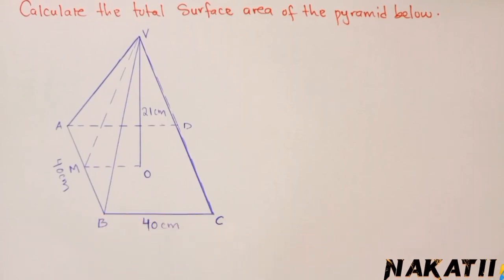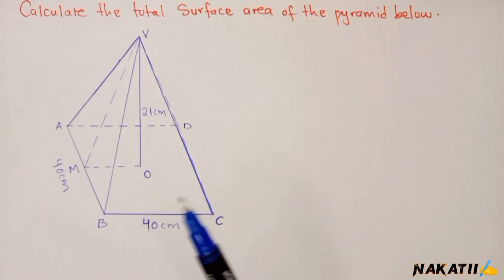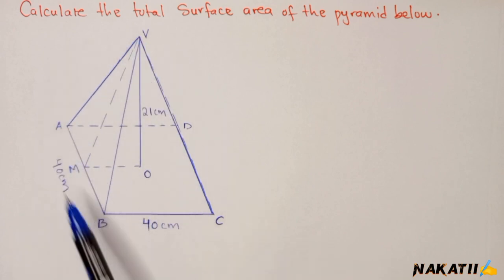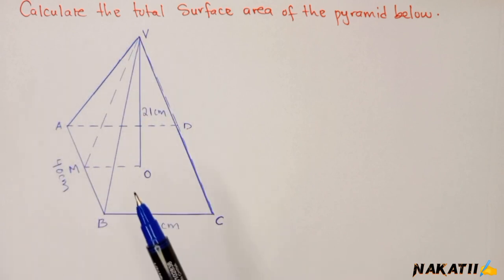We have been told to calculate the total surface area of this pyramid here. What we need to know is that these triangles, these four isosceles triangles, are equal.